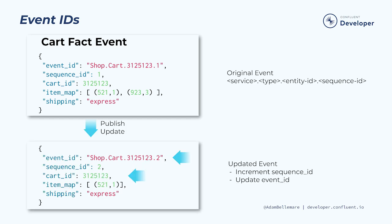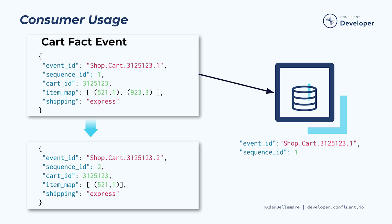Say we update the event — in this case, we remove some items from the cart, update the sequence ID from 1 to 2, and create the new event ID. Note that we've explicitly used the sequence ID as part of the event ID to ensure uniqueness. A consumer that reads this event has the option to store the event ID locally in its own data store. It can use the event ID as both part of a deduplication strategy and also to ensure that it's receiving all of the events in the correct order. When reading the next event for that specific cart ID, the consumer can ask: have I seen this event yet? If so, discard it as a duplicate. And is this the next event in the sequence for the cart ID? If it's not, the consumer will need to decide: does it wait for the properly sequenced event, store it for later, or just apply it and move on?